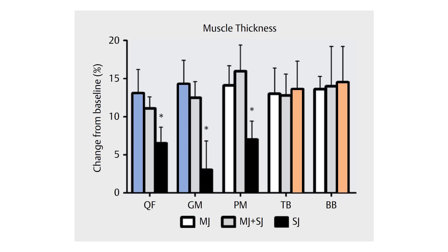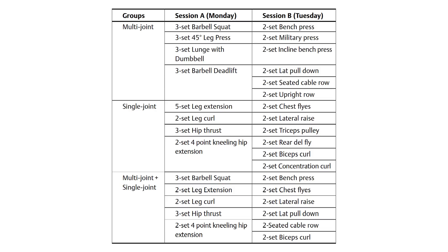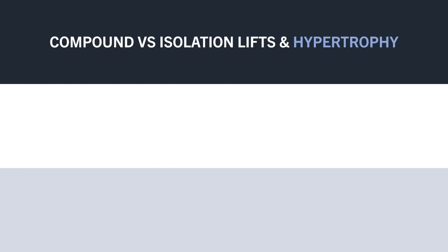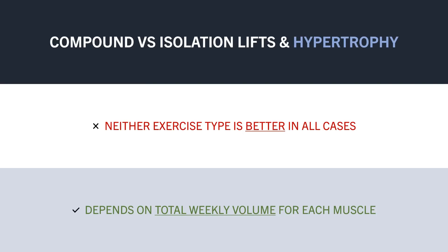These results are probably what you would expect based on the training protocols. The compound only group included more effective quad and glute training via squats, leg press, lunges, and deadlifts, whereas the isolation only group only included quad and glute training via leg extensions, hip thrusts, and hip extensions. Alternatively, the isolation group included more direct arm training via tricep pushdowns and bicep curl variations, whereas the compound only group had no direct arm training — only indirect training. So neither exercise type is inherently better for muscle growth in all cases; it depends on which exercise trains which muscle and how much total weekly volume is allocated to each muscle group.